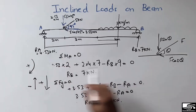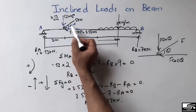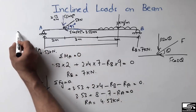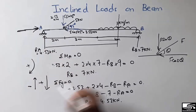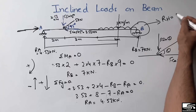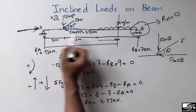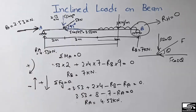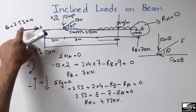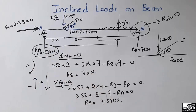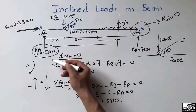The horizontal component of the load is 5 cos 45 degrees, which equals 3.53 kN. The horizontal resistance is provided only by the hinge support, since the roller support does not provide horizontal resistance. Therefore, the hinge provides a horizontal reaction of 3.53 kN equal to the applied horizontal load. Remember that external forces must equal the resistance forces for equilibrium.